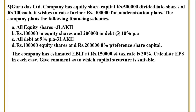Given these four financial plans, the company has estimated EBIT (operating profit) at Rs. 1,50,000 and the tax rate is 30%. Calculate EPS in each case and give a comment as to which capital structure is suitable. The capital structure is the combination of equity shares, debentures, borrowed funds and loans — how you have to raise the funds.